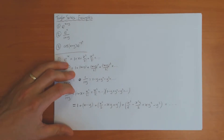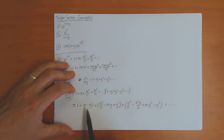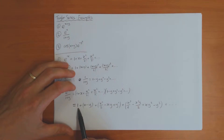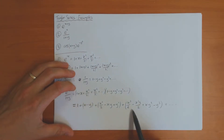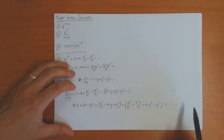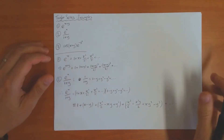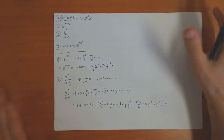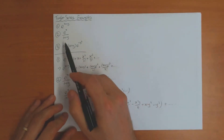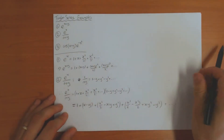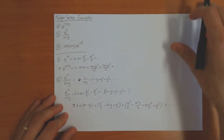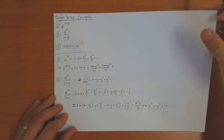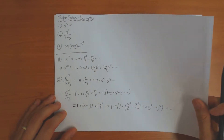This defines the Taylor series in two dimensions — constant term, first order, second order, third order, and so on. You see there's nothing too difficult. The final example is slightly more tricky, but the same method works again.